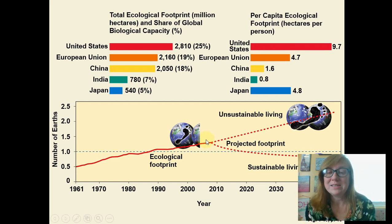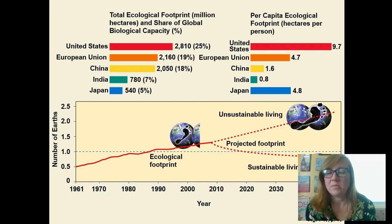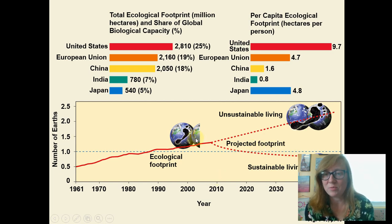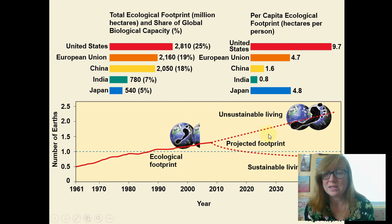We need to get on a path where we are producing less and producing things in a more ecologically friendly way — living sustainably so we don't use more than one Earth. Because guess what, there's literally only one Earth. This is not sustainable; there aren't two Earths' worth of resources, but that's the path we seem to be on right now.